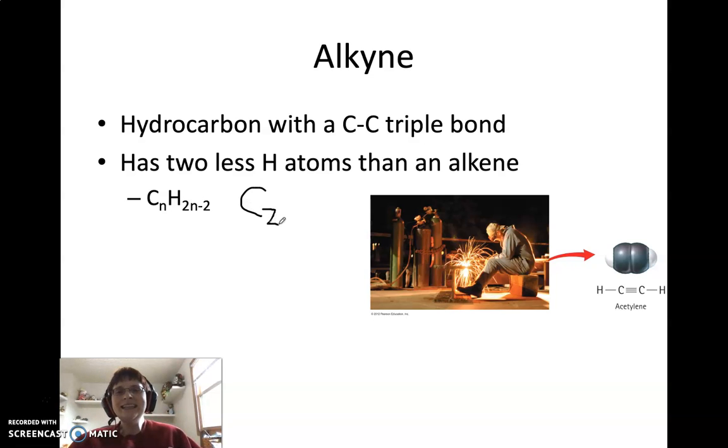So our smallest alkyne is C2. And then we've got H, so 2n would be 2 times 2 minus 2. So we've got H2, because we've got 4 minus 2 would be H2. So C2H2. And this group is highly reactive because of that triple bond. So just like we saw in the last slide with saturated versus unsaturated, these are highly unsaturated because if you look over here at the structure on this guy, it's got those triple bonds, lots and lots of space to put in more hydrogen.